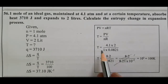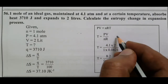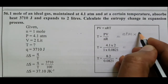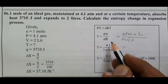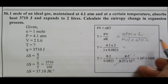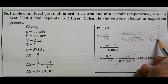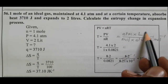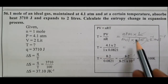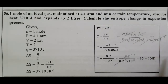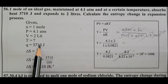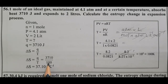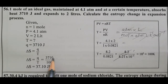Temperature unit: pressure unit is atm, volume unit is liter divided by number of moles, R value unit is atm liter Kelvin power minus 1 mol power minus 1. Units cancel: liter cancels liter, atm cancels atm, mol cancels mol power minus 1, leaving Kelvin power minus 1. So delta S equals Q divided by T equals 3710 divided by 100, giving delta S equals 37.10 joule Kelvin power minus 1.